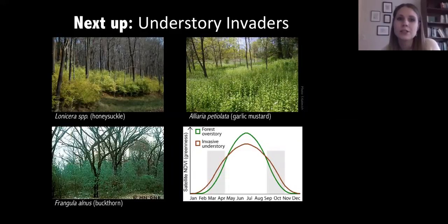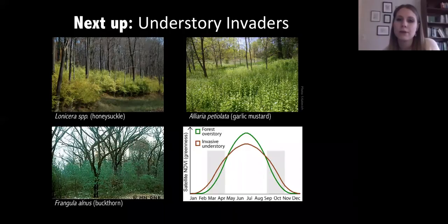In addition to canopy species, we're also very interested in understory invaders. There's the expectation that understory invaders like honeysuckle, garlic mustard, and buckthorn — known to have an earlier green-up — may influence the phenology signal earlier in the season. Similar to the work we're doing with canopy species, we're also interested in looking at places that are known to have these understory invaders and determining if we can sort out their spectral signature from more native vegetation.